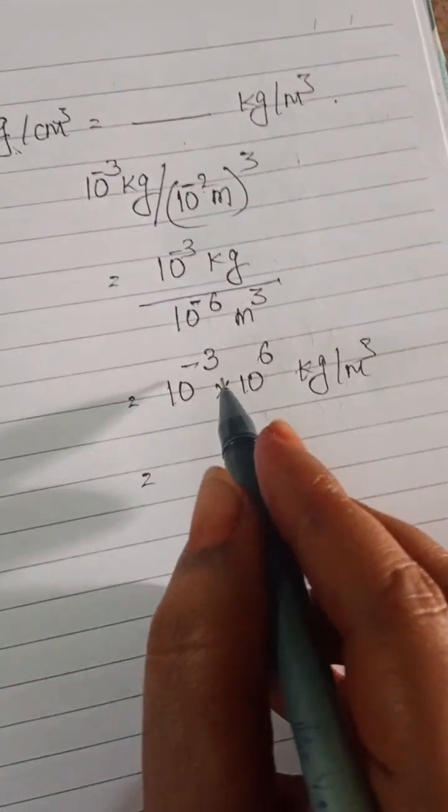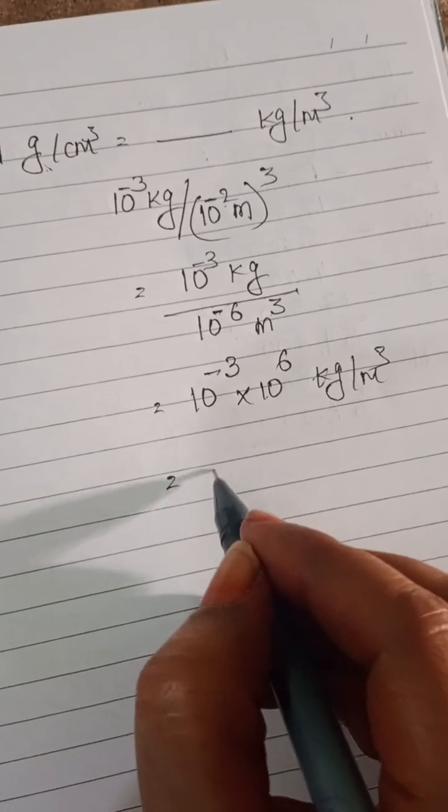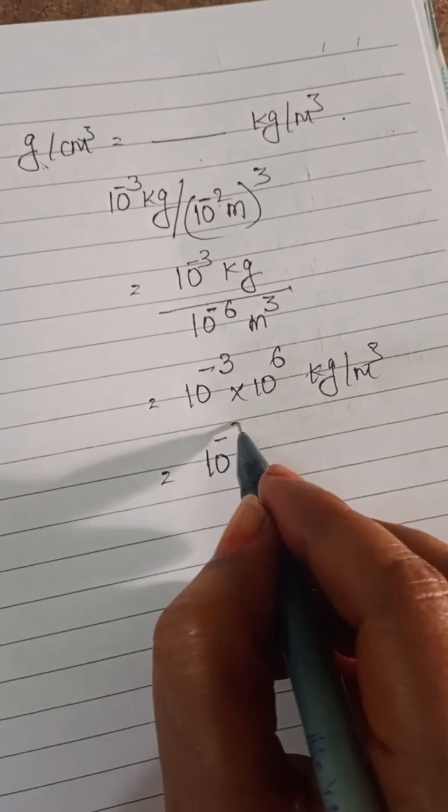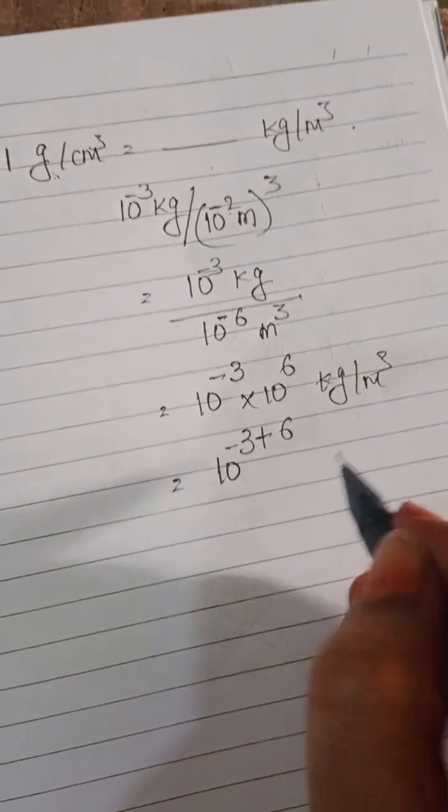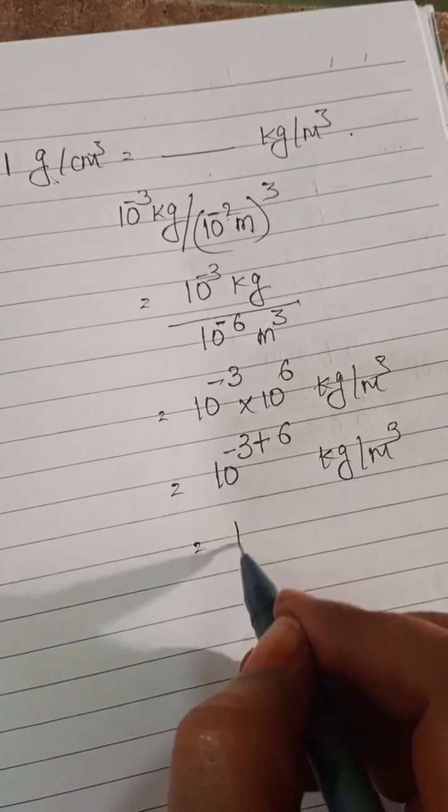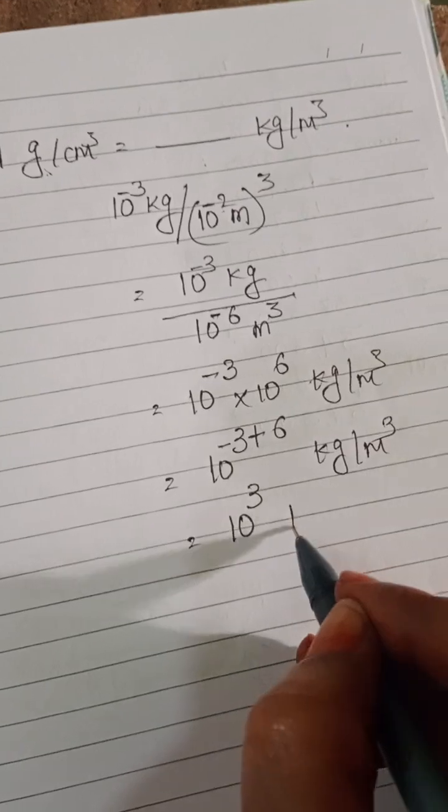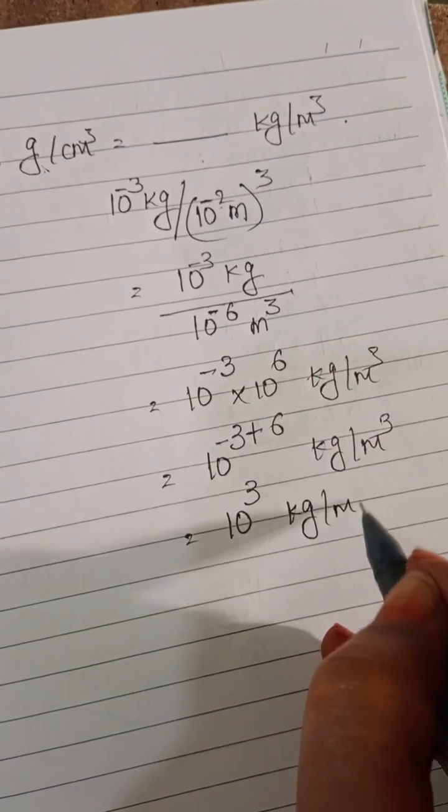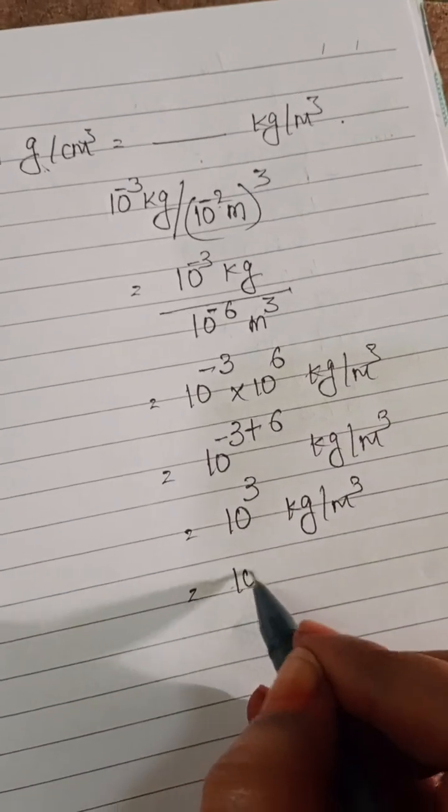This is like x power m into x power n equals x power m plus n. 10 power minus 3 plus 6 kg per meter cube. 10 power plus 3. That equals to 1000.